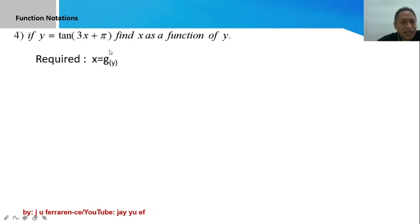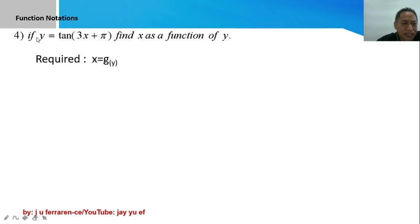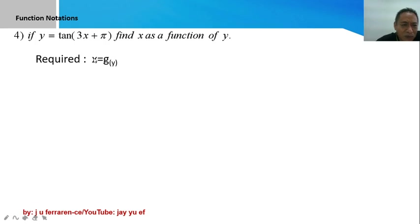Number four: you are asked to express x as a function of y, where the given function is a trigonometric function. Previously, we noted that functions can be of different types — algebraic and transcendental. This is a transcendental function, specifically trigonometric. The required is to express x as a function of y, so we can call x being a function of y.